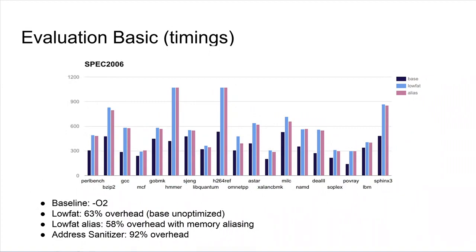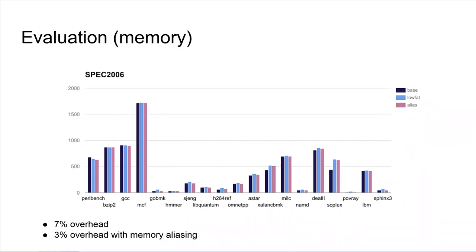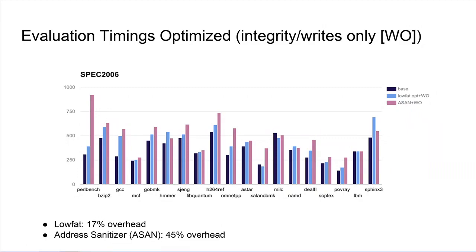For benchmarks: the baseline without optimization gives about 63% overhead, which is actually quite good for a bounds checker — Address Sanitizer is about 92% overhead. Once we do the aliasing of the stacks, it drops a bit due to greater locality. Memory overheads are very low, and aliasing the stack decreases them even further. If you instrument writes only, which actually prevents a lot of attacks, the overhead drops to about 17% compared to around 45% for Address Sanitizer.